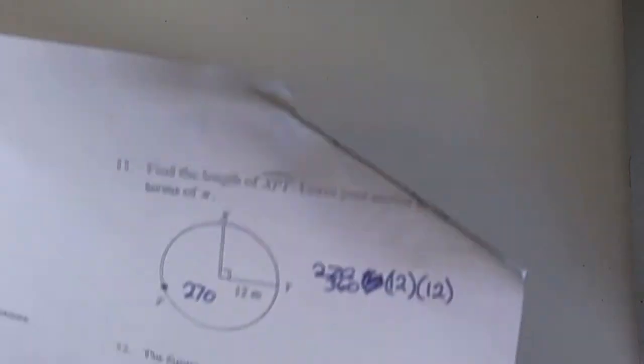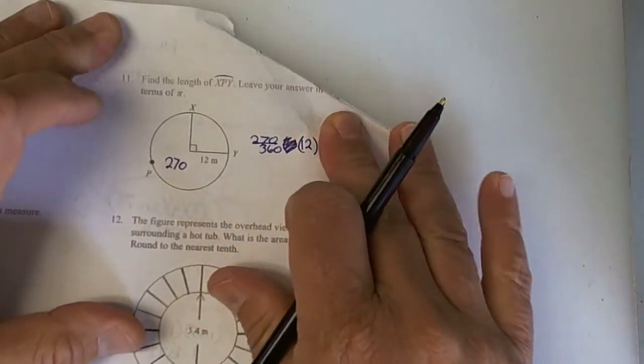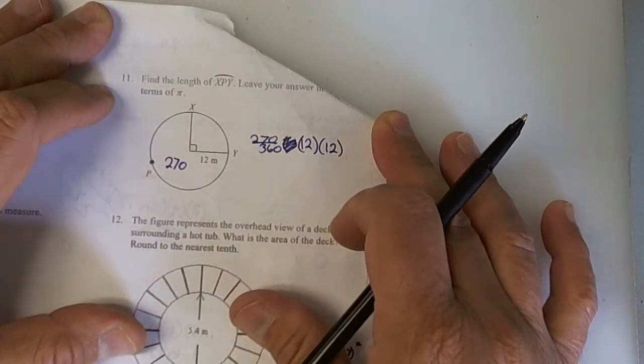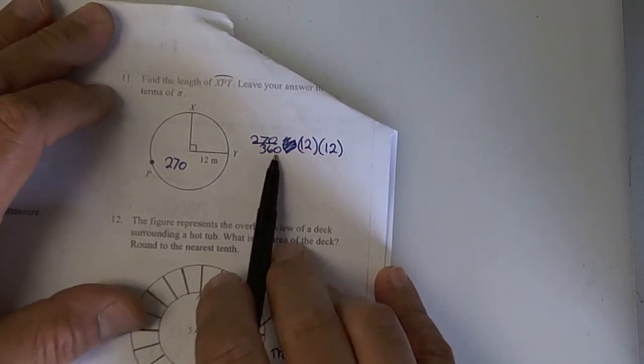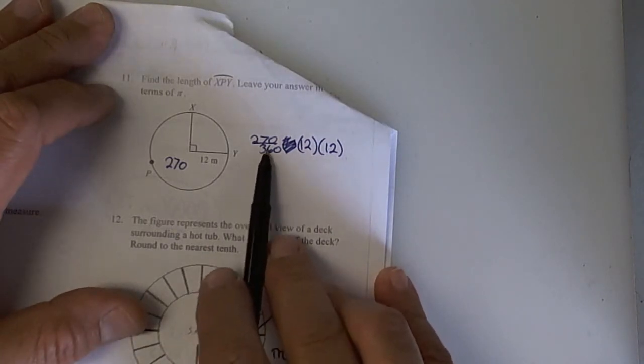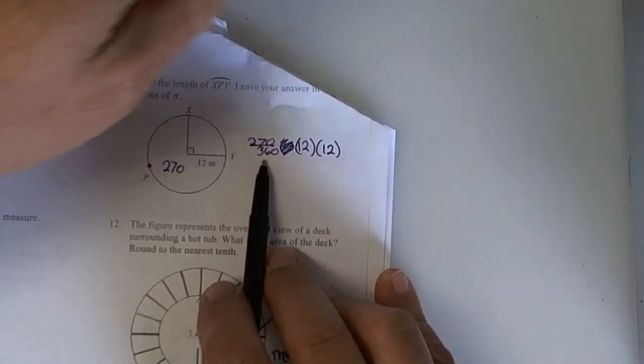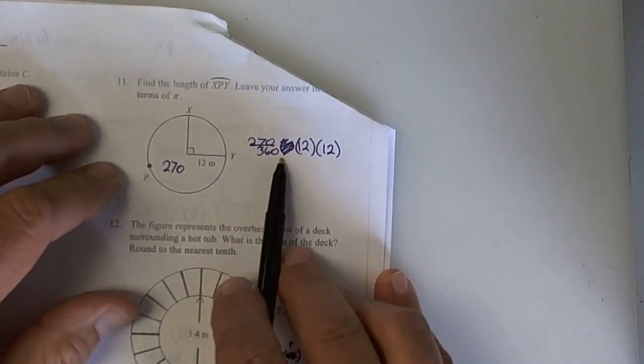Number 10. The next one you missed was number 11. Here's number 11 right here. It says find the length. It looks like you were starting off right, x, p, y, and you have 270 over 360. All of that's good. Okay? But it should be pi times diameter.